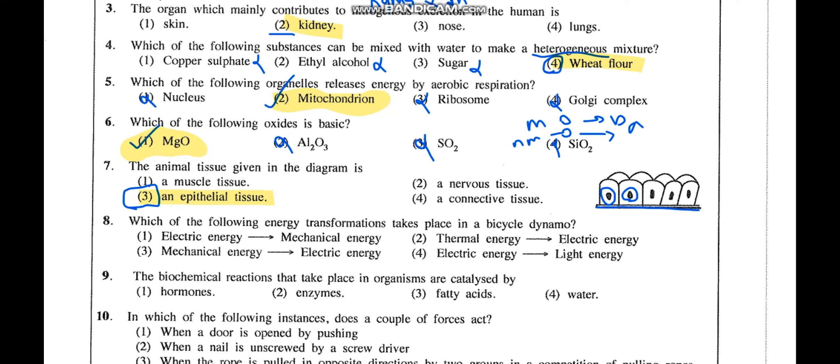Question 8: Which energy transformation takes place in a bicycle dynamo? In a dynamo, magnets are arranged and a coil is wrapped between them. When you pedal, the coil moves, magnetic field lines are cut, and electricity is generated — lighting the bulb. Paddling the bicycle is mechanical energy (kinetic energy). So mechanical energy is converted to electrical energy. The answer is the third option.